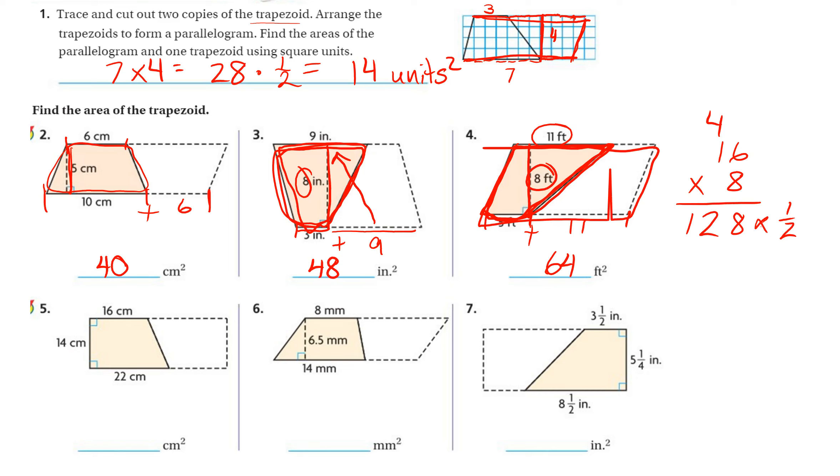But again, I can show you that any way you'd like, so we can put 128 over 1 and multiply it by 1 half. I can cross-simplify here. 2 goes into 2 one time, 2 goes into 128 64 times. 64 times 1 is 64, 1 times 1 is 1, and 64 over 1 equals just 64.